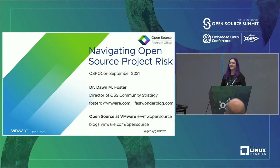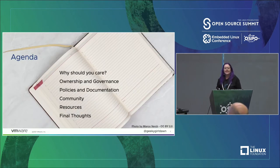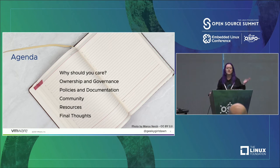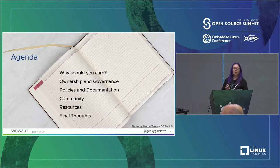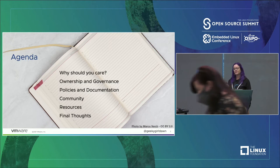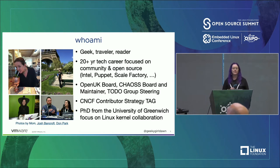Welcome to my talk. Today I'm going to talk about navigating open source business risk — specifically evaluating risk for open source projects. I'll start with a brief overview about why it's important to think about risk, the difference between company-owned and foundation-owned projects, neutral governance, policies and documents to look for, community risks, and wrap up with final thoughts and links to resources. The presentation is already uploaded on Schedge.